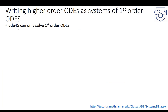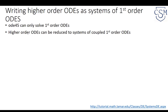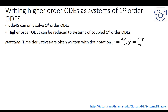With ODE45, we are limited to solving only first-order ODEs. However, many ODEs are of higher order, such as the second-order ODE F equals MA, that is mass times the second derivative of position. Higher-order differential equations can be reduced to systems of coupled first-order differential equations. When the independent variable is time, we use dot notation: y-dot for the first derivative and y-double-dot for the second derivative of y with respect to time.